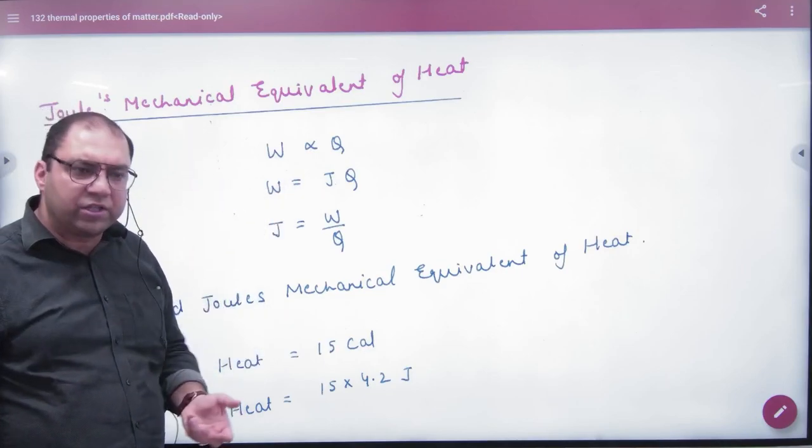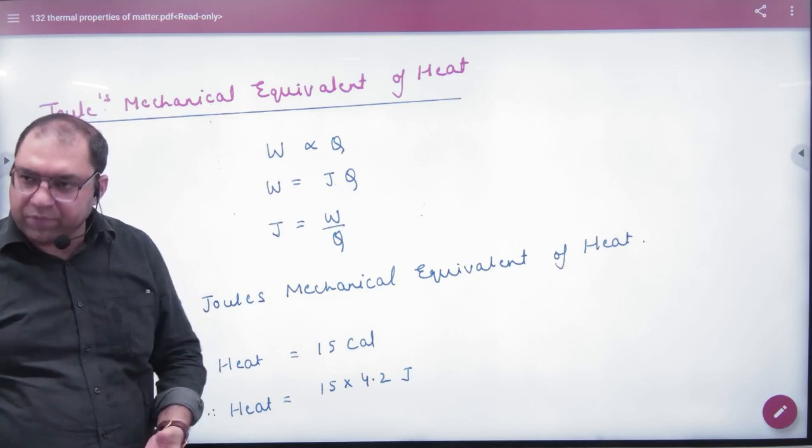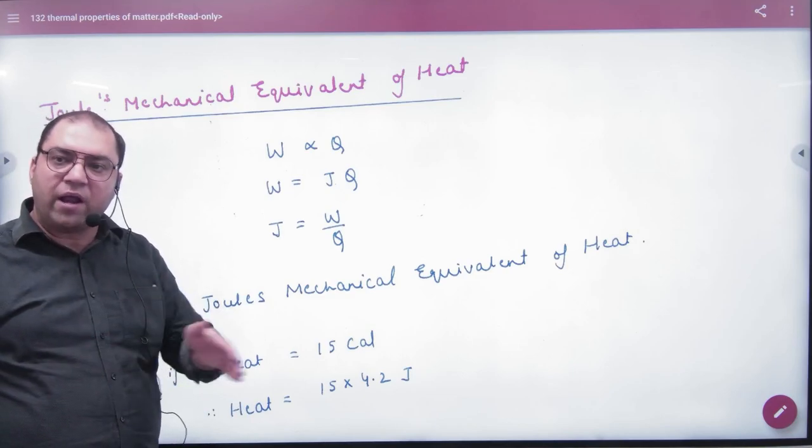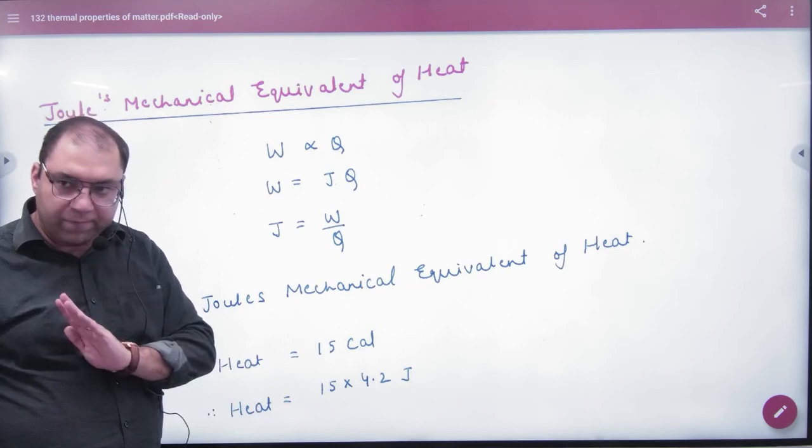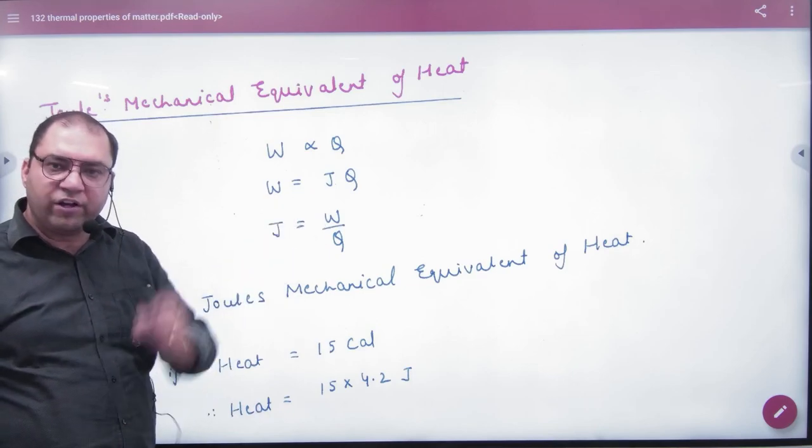Work done and heat are different. Work done is measured in joules, heat is measured in calories, but joules can be converted into calories and calories can be converted into joules. For this, J is a constant. J means joules equivalent, its value is 4.2 something.